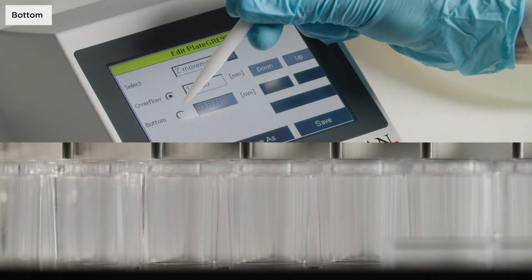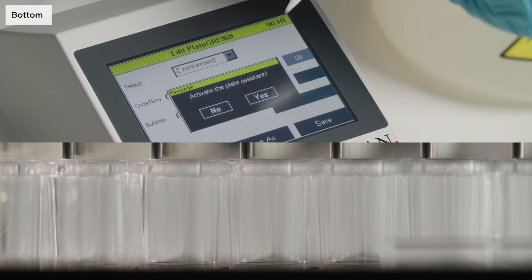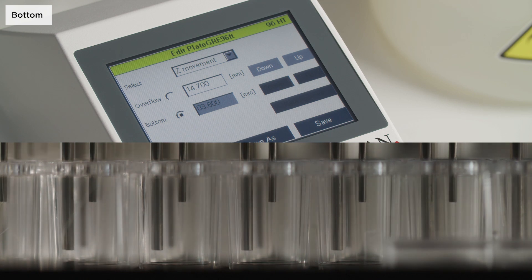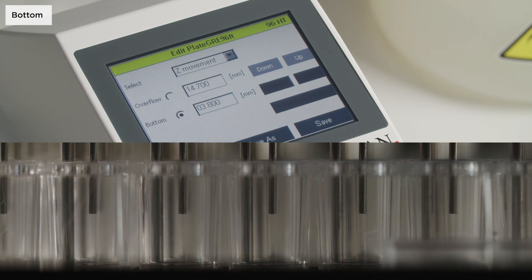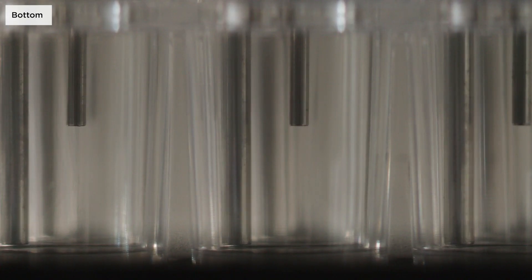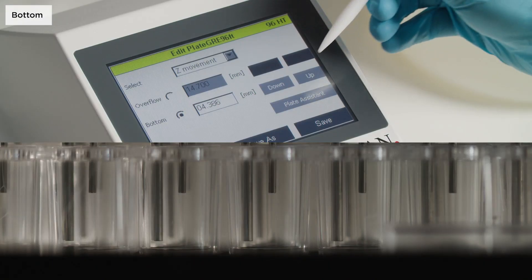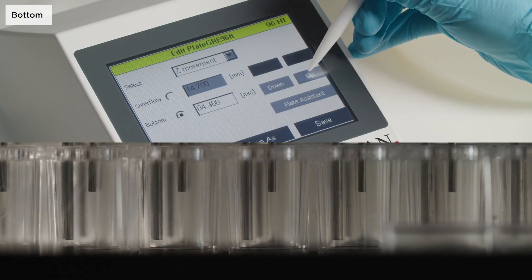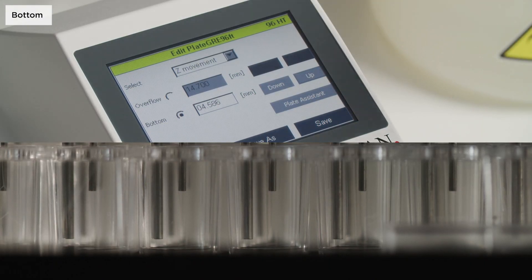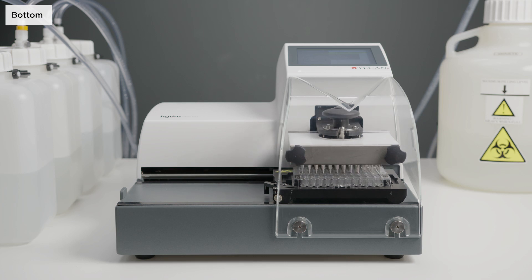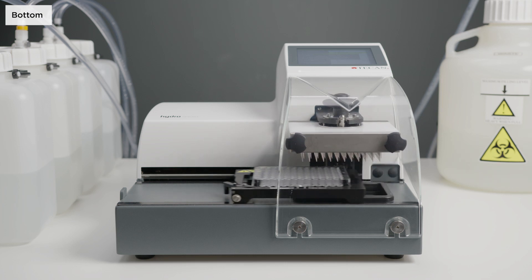When selecting bottom, the instrument will ask you if you want to use the plate assistant to automatically find the optimal bottom position. In order to do so, the needles will touch the well bottom, then retract and stop slightly above. You can verify this position but, in most cases, the bottom position needs to be further optimised by the user. The needle should be as close as possible to the bottom of the well, without touching it. The lower the bottom Z position, the lower the residual volume in the well.